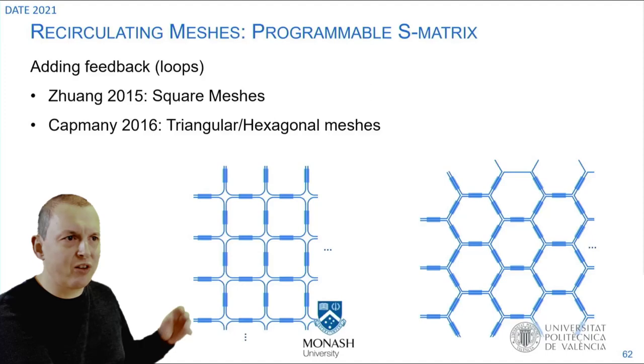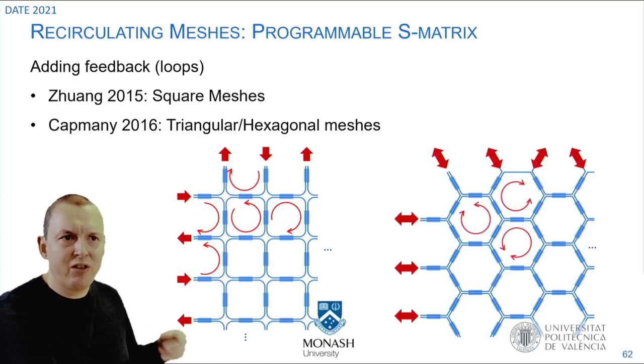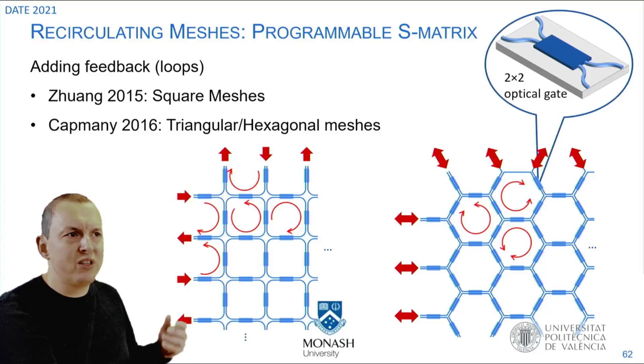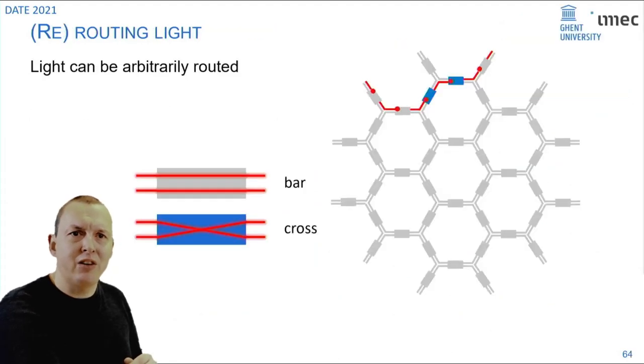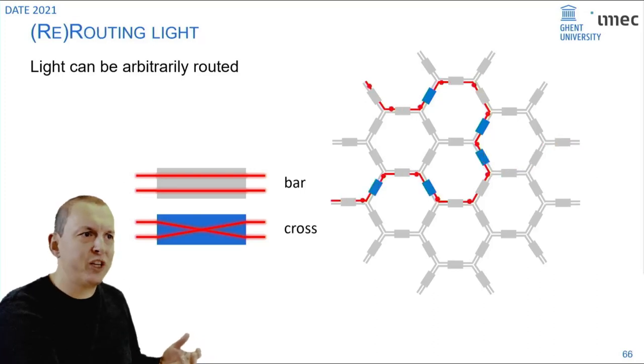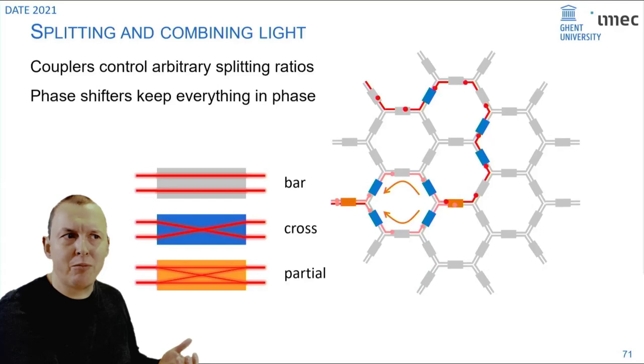We connect our waveguides together with these optical gates, but we do it in loops where the light can circulate in your mesh and even can couple back to your input ports. We use these same optical gates but now in a recirculating mesh. That gives us quite a lot of extra functionality because we can now arbitrarily route the light through our mesh, we can introduce power splitting, so we can route, we can do power distribution, but we can also recombine the light in an interferometer.